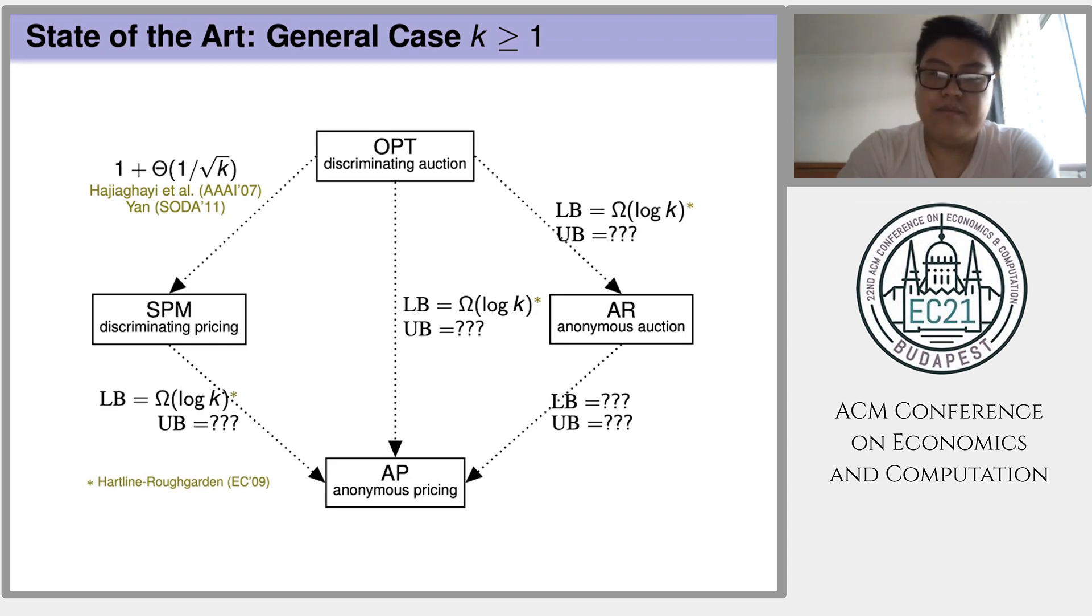By now, only among all of the five bounds, only the one between OPT and SPM is well understood. We know that this bound is of order 1 plus 1 over root k. But for the other four bounds, no much progress has been made, except that those three bounds each admit a log k lower bound.